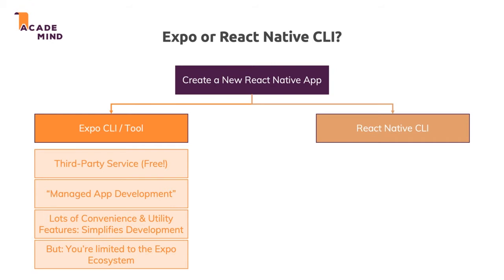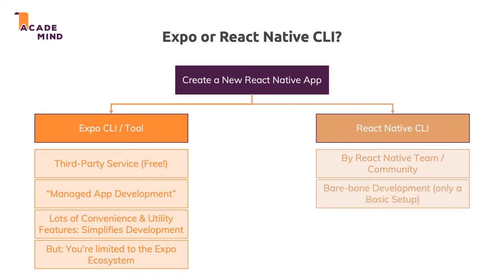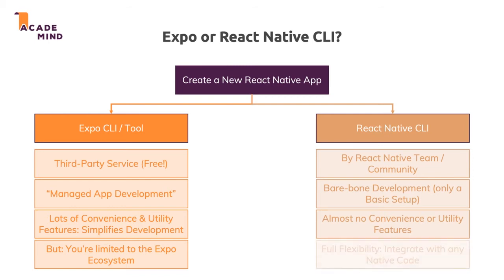The React Native CLI, managed by the React Native team and community, gives you a bare-bone development setup. You get a native app, but you need to install Android Studio and Xcode to build it, and you need to configure and manage a lot on your own. As soon as you want to use native device features like the camera, you'll have to bring in third-party packages where the setup process can be quite complex. You have pretty much no convenience features, but you do have full control — you can write your own native Android and iOS code and connect it to your JavaScript code.